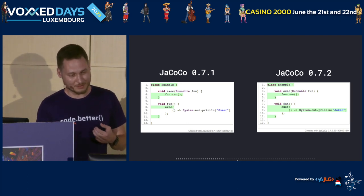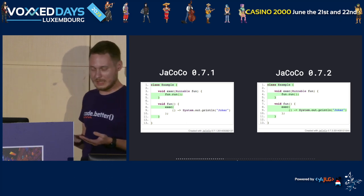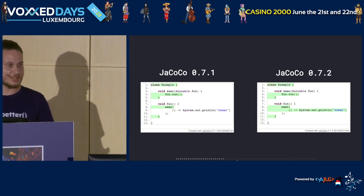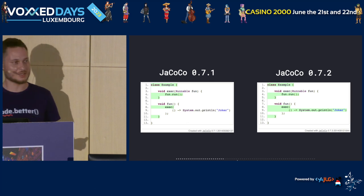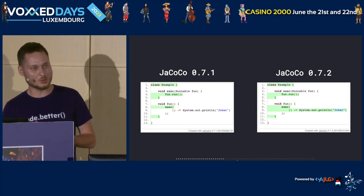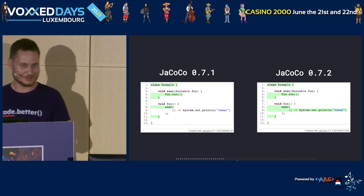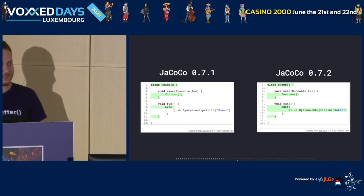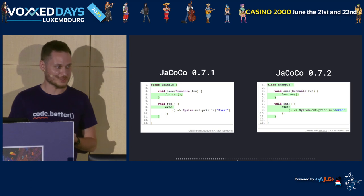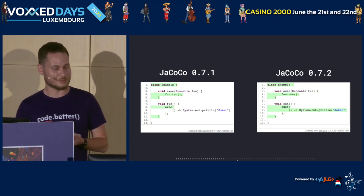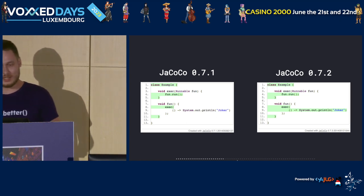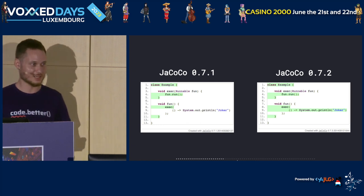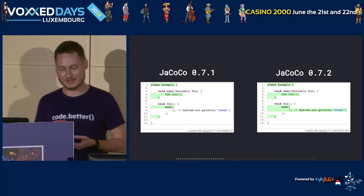If we ignore all synthetic members, we lose coverage for any lambda you write — that's exactly what happened. We need to fix this. We write special code: if the member is synthetic but its name doesn't start with 'lambda$', then filter it out; if it starts with 'lambda$', keep it. The problem is there is no specification for this — it's implementation details. Kotlin has different naming conventions. Scala has different ones, and those change over time.